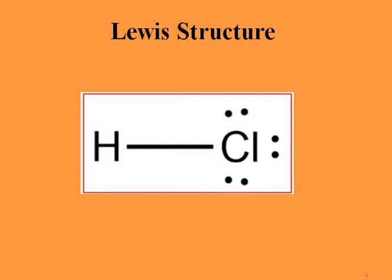The Lewis structure is like this: chlorine belongs to group seven and has seven electrons in the valence shell, and hydrogen has one. So we have one single bond between H and Cl, and three lone pairs around chlorine. This satisfies the octet rule for chlorine and the duet rule for hydrogen.